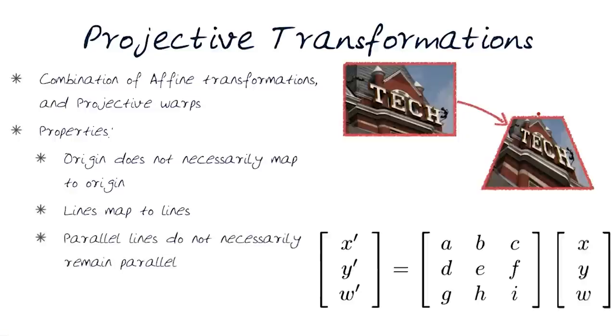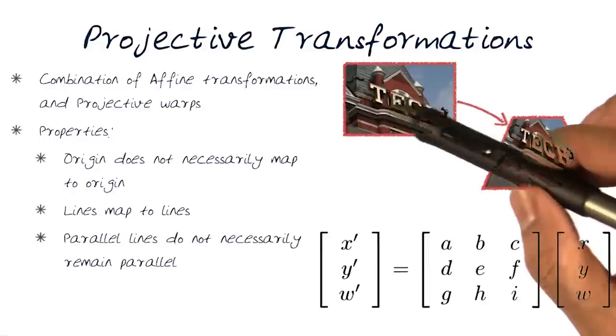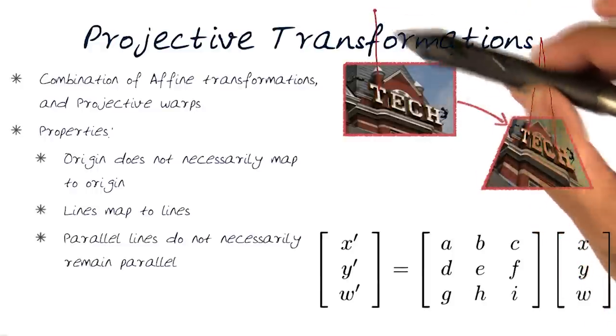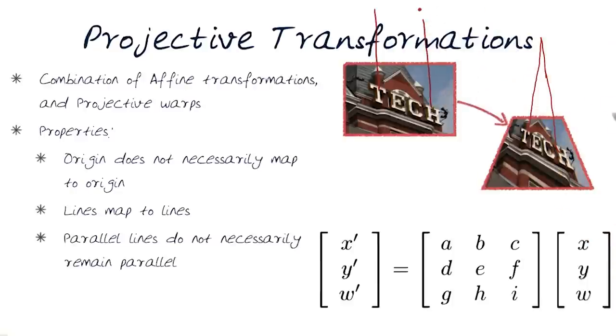But now, parallel lines do not necessarily remain parallel. An example of this: you may actually see that, for example, if T and H, if they were parallel here, they're no longer parallel. If I was to draw an H here and T here, let's just do that. And they would actually intersect somewhere, while T and H are unlikely to intersect.